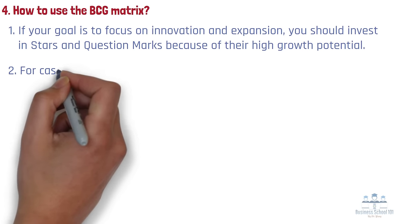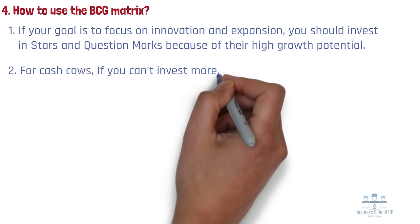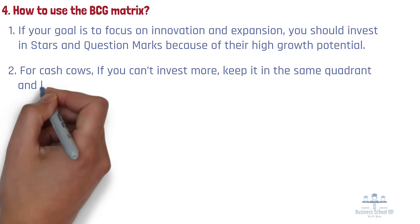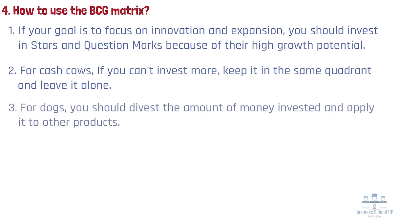Number two: For cash cows, if you can't invest more, keep it in the same quadrant and leave it alone, because it is a well-established product that takes less effort to maintain. Number three: For dogs, due to their low market share and low growth potential, you should divest the amount of money invested and apply it to other products.